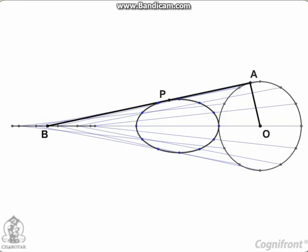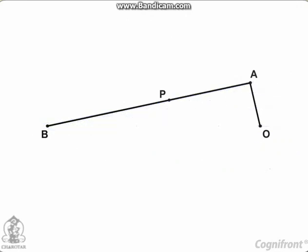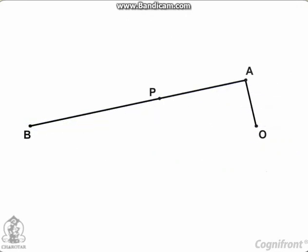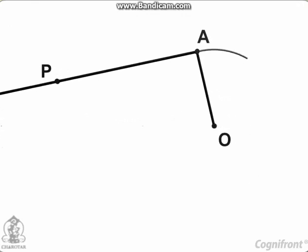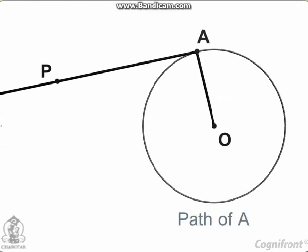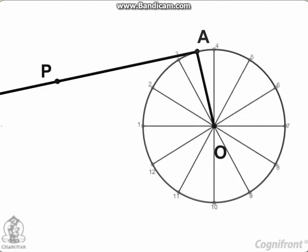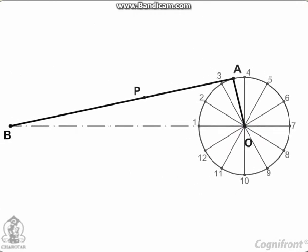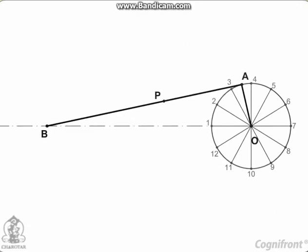Let's see the stepwise procedure to draw the above path. First, draw a circle which is the path of point A. Then, divide the circle into 12 equal parts. From the center of the circle O, draw a center line which passes the end point B of the rod.